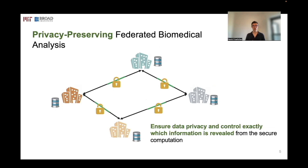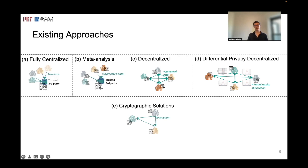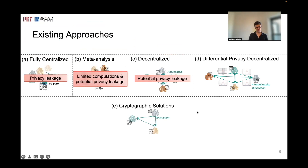In order to avoid this, one solution is privacy-preserving federated computations, in which by ensuring the privacy of the data and by controlling exactly which information is revealed from the computation, we can develop solutions that would avoid these roadblocks. Multiple approaches have been proposed: in the fully centralized approach, raw data are directly sent to a third party that computes on all the data. Alternatively, data providers can locally compute on their data and share aggregated results with a third party, or exchange aggregated data to perform a federated computation.